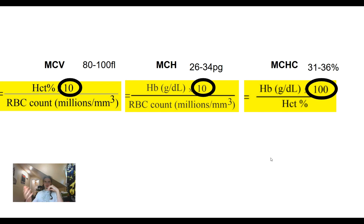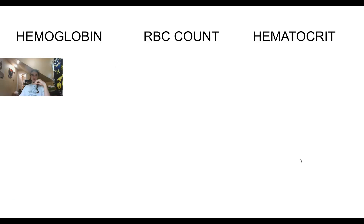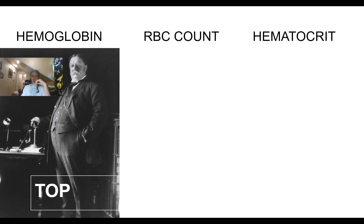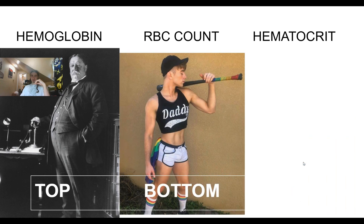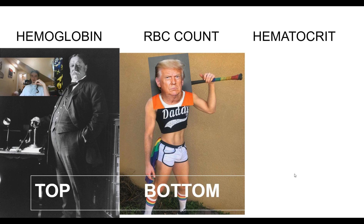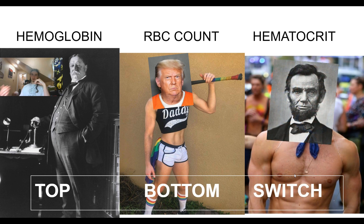I also struggle sometimes — trying to remember, is it the hemoglobin and the hematocrit that makes up the MCHC? Which one is which? You can do a plug-in and chug-in to help with that too. But here's how I like to remember these: hemoglobin is always on top, no matter which equation it's in. Red blood cell count is always on the bottom — it's always in the denominator. And hematocrit is our switch: hematocrit is topping red blood cell count for the MCV calculation, but it's getting topped by hemoglobin for the MCHC equation.